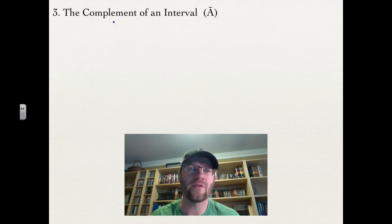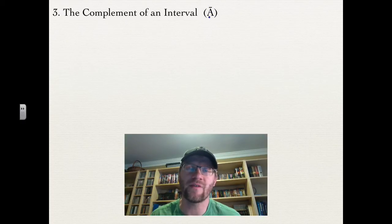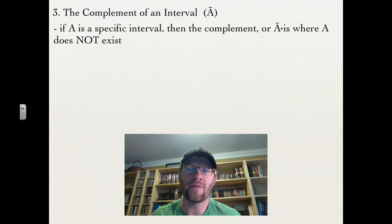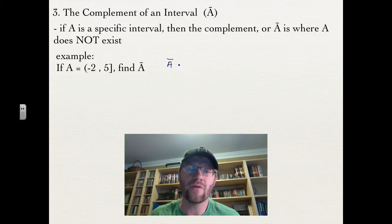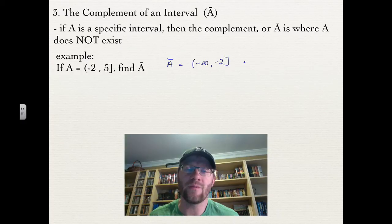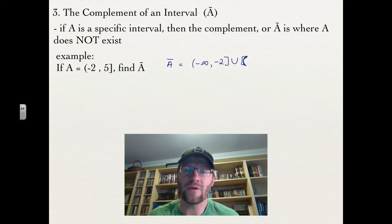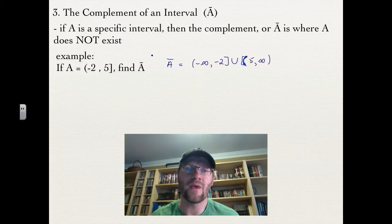The third way is the complement of an interval, denoted by a line over the interval — called A bar. If A is a specific interval, then A bar is where A does not exist. For example, if A is from negative 2 to 5 with an open bracket at negative 2 and closed at 5, then A bar is everything A is not: negative infinity to negative 2 with a closed bracket — since negative 2 wasn't in A — or 5 with an open bracket all the way to infinity, since 5 is included in A.